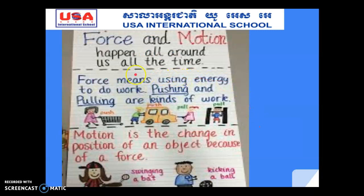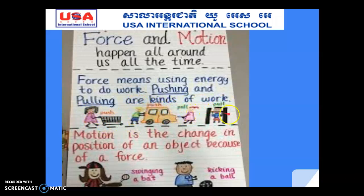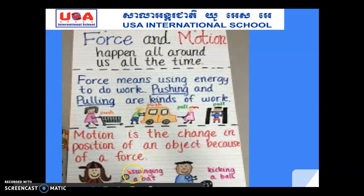Force and motion happen all around us all the time. Force means using energy to do work. Pushing and pulling are kinds of work. Motion is the change in position of an object because of a force — for example, swinging a bat at a ball.